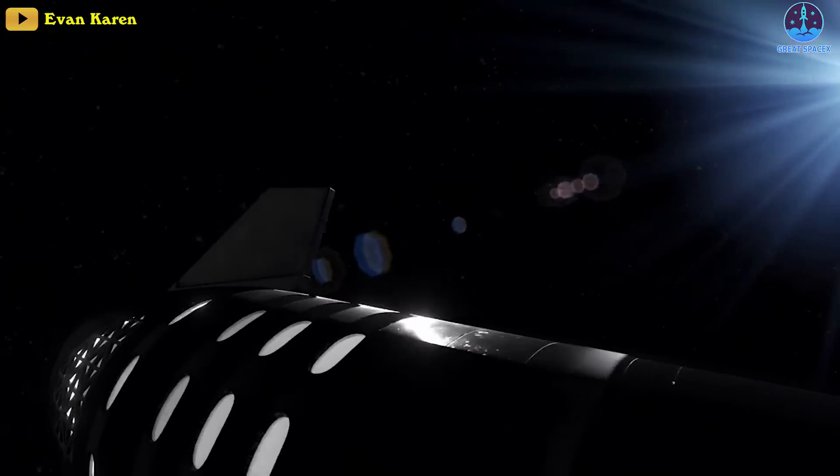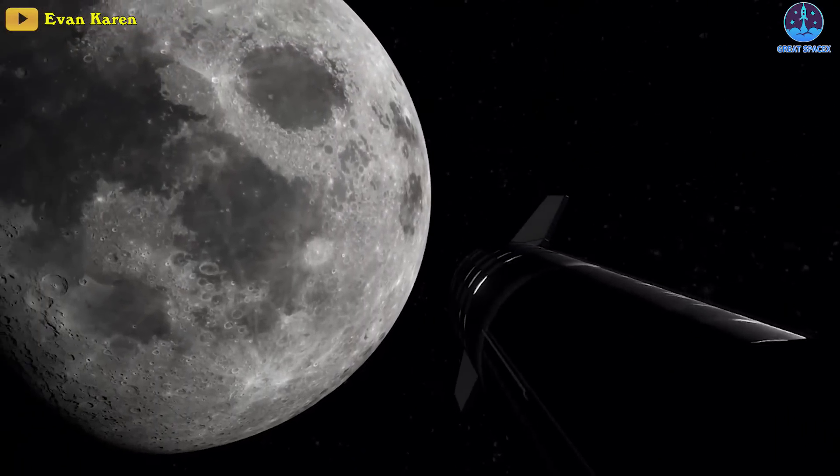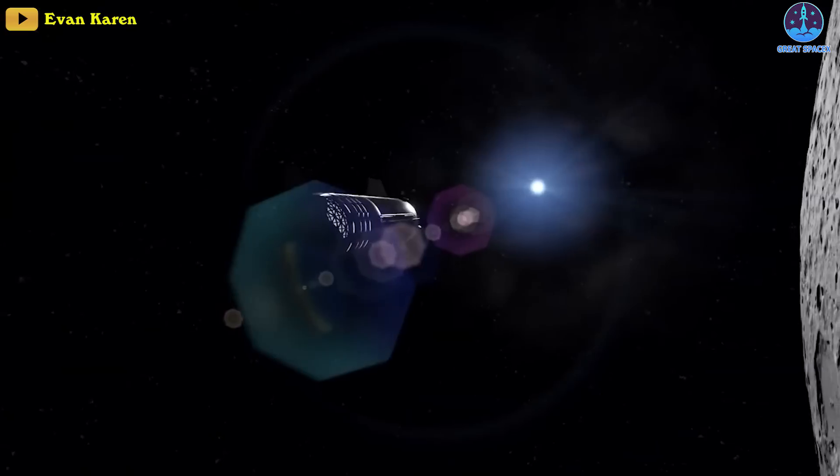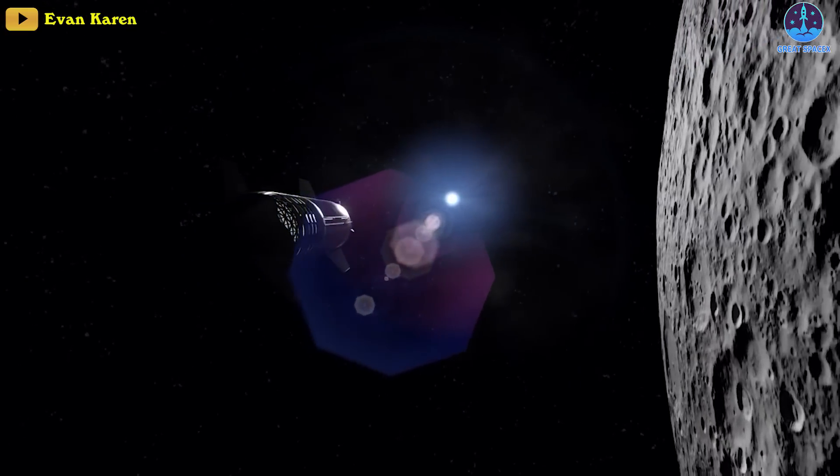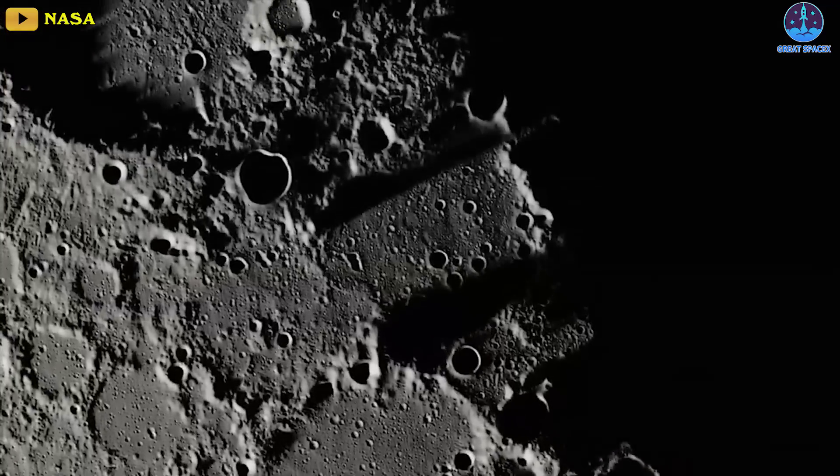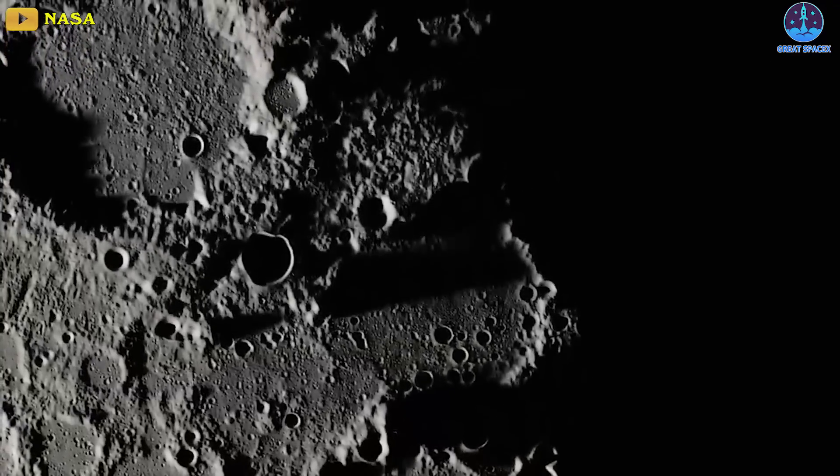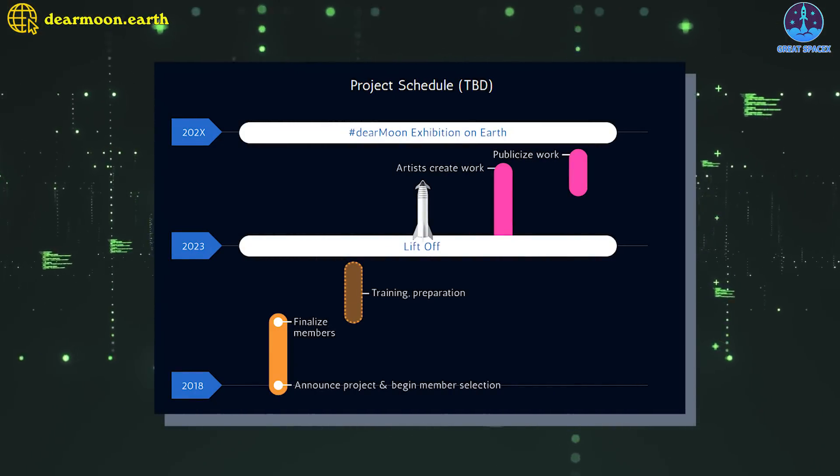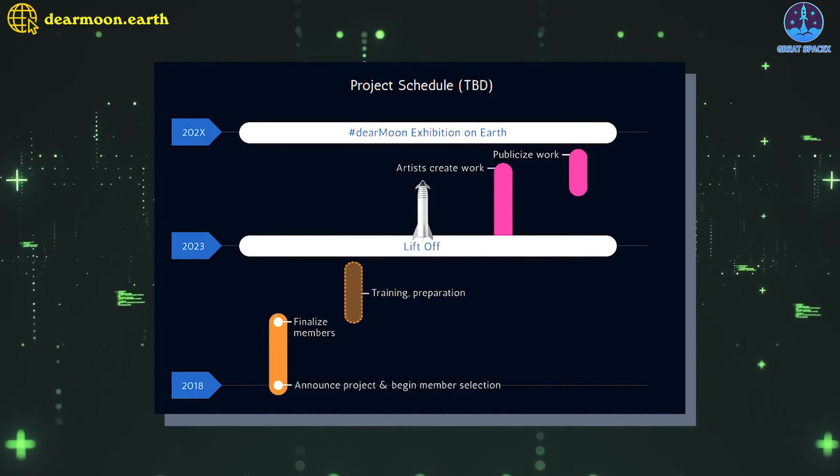It is a lunar tourism mission and art project conceived and financed by Japanese billionaire Yusaku Maezawa. It will make use of a SpaceX starship on a private spaceflight flying a single circumlunar trajectory around the Moon. The project was unveiled in September of 2018, and the flight is expected to occur no earlier than 2023.